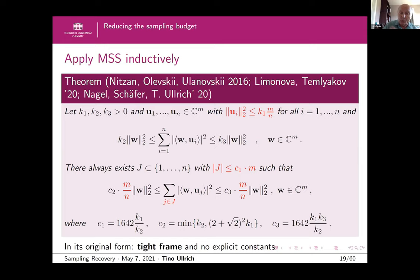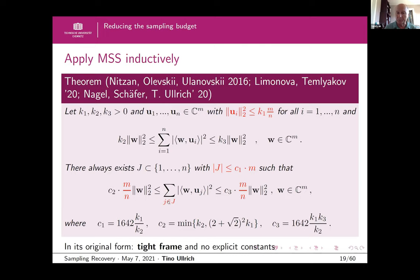To clarify the reason for iterating: a single application of the Weaver-type result only halves the frame size, so going from N down to O(M) requires multiple iterations. The key improvement over Nitzan-Olevskii-Ulanovskii is removing the exact equality norm condition and controlling cardinality. This is why the generalization was not trivial and required additional work.